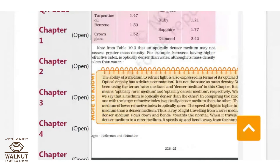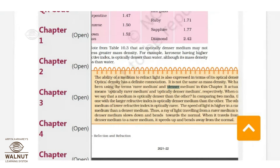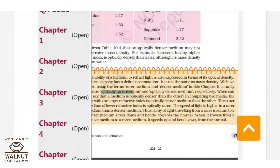Optical density is not the same as mass density. We use the terms rarer medium and denser medium in this chapter. A rarer medium is one whose particles are very loosely arranged, while a denser medium has particles arranged very closely together. For example, in air and glass: air is a rarer medium because its particles are loosely arranged, and glass is the denser medium. In optics, this actually means optically rarer and optically denser medium.